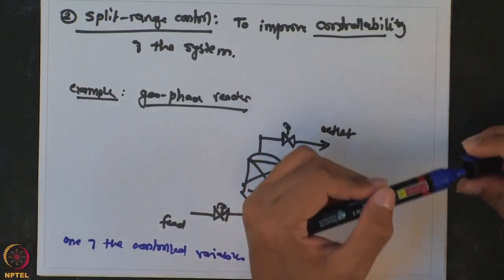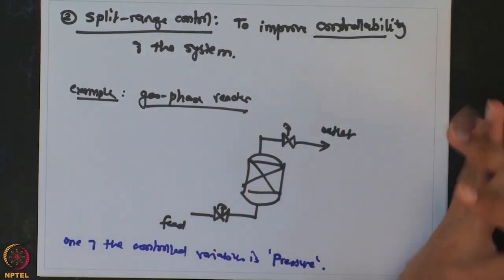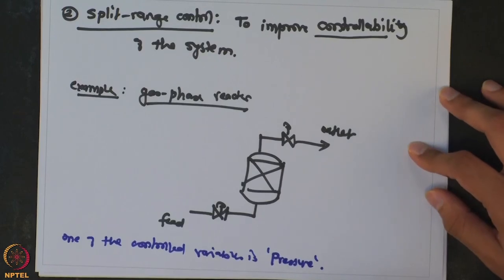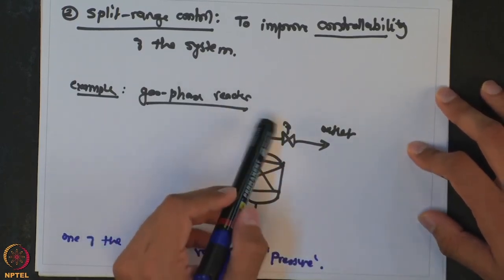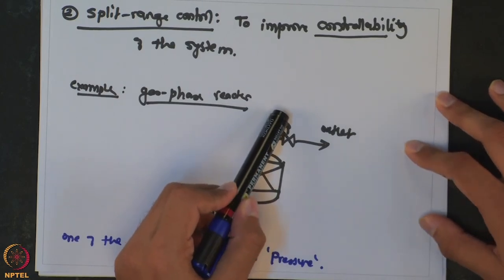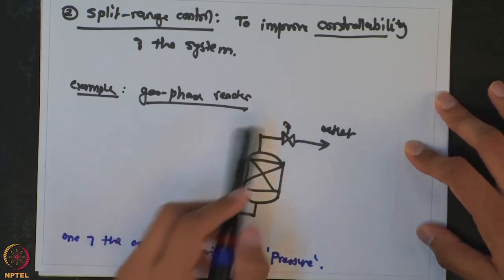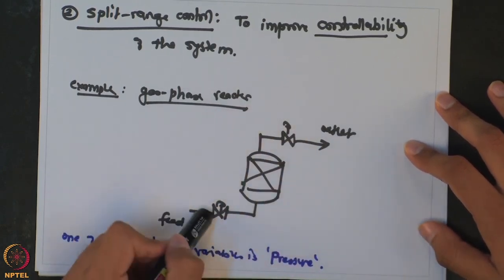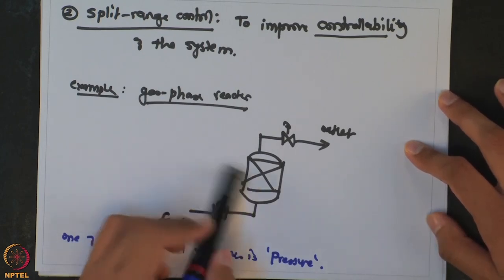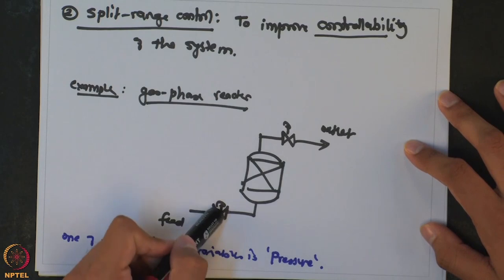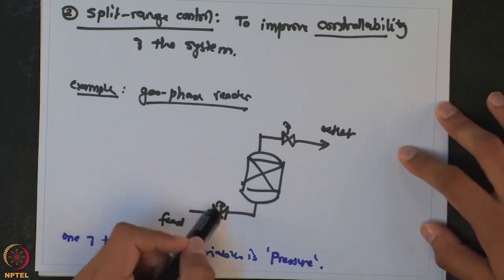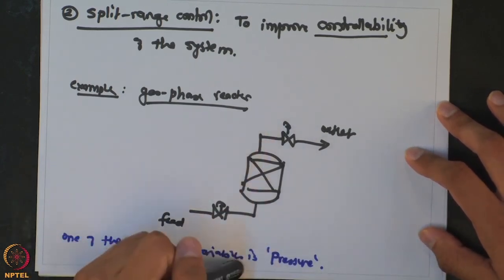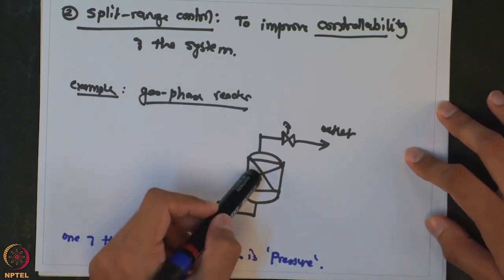Going back to last week's lectures, there are two primary options to control the pressure. One is by manipulating the outlet valve — if the pressure increases, open the valve more so more vapor goes out. Or I can use the feed valve such that if the pressure goes above the set point, I reduce the amount of feed going into the reactor.